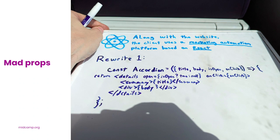A distinction I'd like to highlight: React is an abstraction layer. You can use a tag with an uppercase-A Accordion in your code, pass props, and do all the things you do with React code — but you don't see that in the resulting HTML source. You see the HTML code being returned from that statement, so that details tag prints to the page.